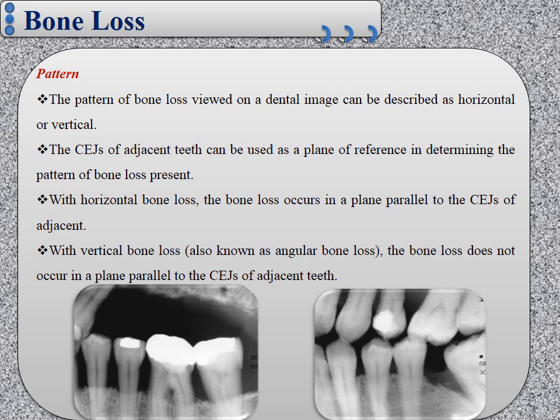While in vertical bone loss, also known as angular bone loss, the bone loss occurs at an angle to the plane of the cementoenamel junction, which means that the bone loss does not occur parallel to the plane of cementoenamel junction of the adjacent teeth, but at an angle to this plane. Therefore it is called angular or vertical bone loss, as we see in the second dental image.